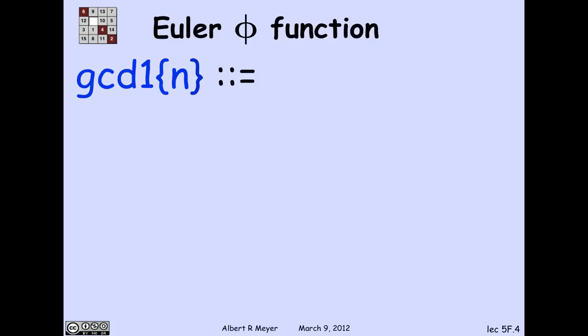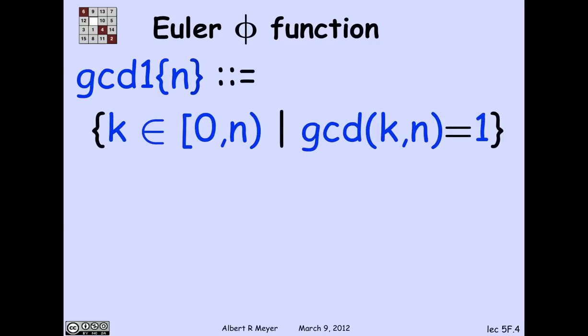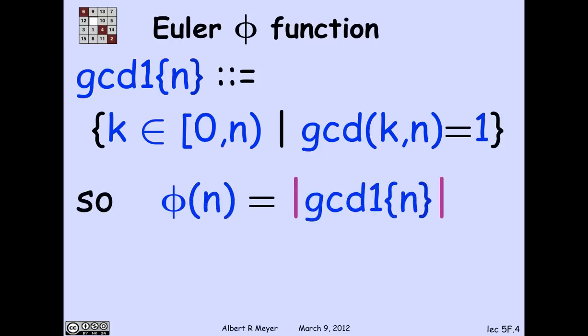So let's define that set of numbers that we're interested in. Let GCD1 of n be those numbers that have a GCD of 1 with n. That is the numbers that have inverses and the numbers that are cancelable modulo n. So what it means is that phi of n is precisely equal to the size of GCD1 of n.